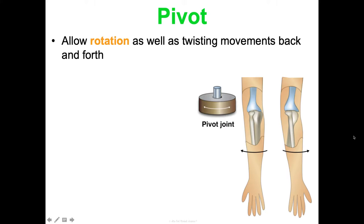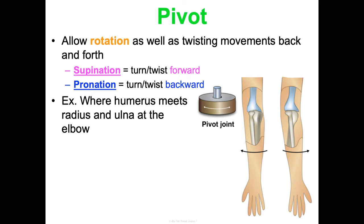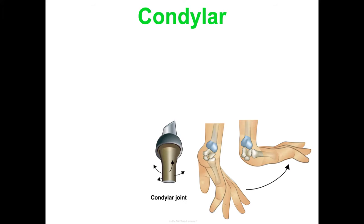At a pivot joint, rotation and twisting movements are allowed. These twisting movements are called supination — turning and twisting forward to face anteriorly — and pronation — turning and twisting backward to face posteriorly. An example of a pivot joint is where the humerus meets the radius and ulna at the elbow.